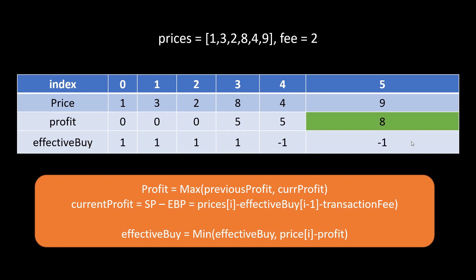At the end, this profit is the entire profit achievable from making multiple transactions while taking into account the transaction fee applicable for those transactions. So that was the theory behind the question.